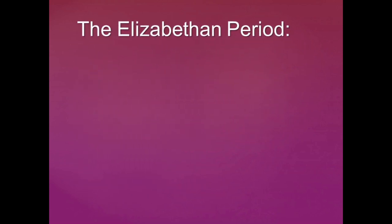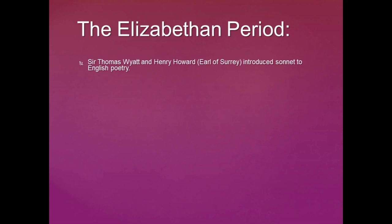During the Elizabethan period we have poets like Sir Thomas Wyatt and Henry Howard, the Earl of Surrey — commonly called Wyatt and Surrey — who introduced the sonnet to English poetry. We have Edmund Spenser, who wrote a long allegorical poem titled The Faerie Queene in 1519.